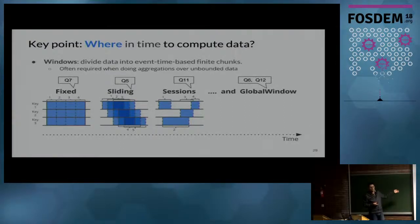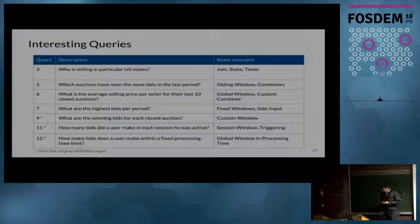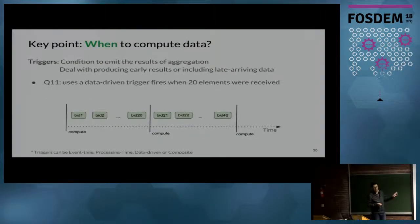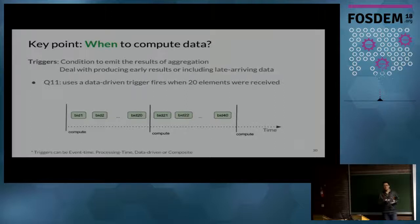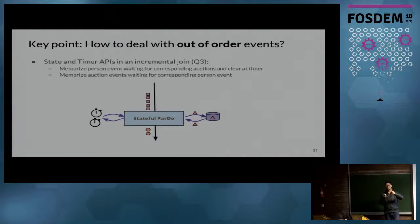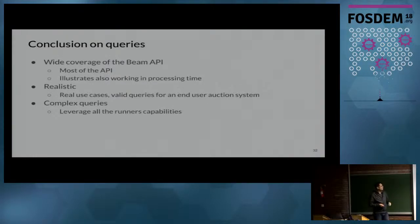For example, we discussed windowing — grouping every N minutes. There are more advanced windowing strategies that these queries cover. Some queries could be answered with simpler approaches, but we chose more convoluted ways intentionally to test more of the Beam model. We also cover triggering for amount of data rather than just time — like when you have 20 samples of something and want an approximate result. And we cover out-of-order data: what happens if a bid arrives before its auction.